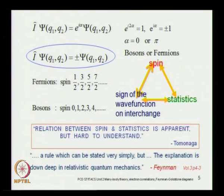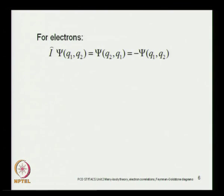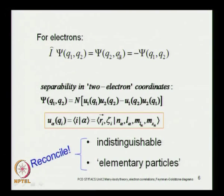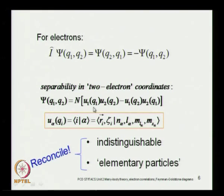Our focus in unit 2 is the discussion on how many-body correlations are to be treated. For electrons, on interchange the electron geminal — the two-electron wave function — changes sign. Consider the wave function as a function of two electrons at q₁ and q₂, separable in one-particle coordinates. The two-electron wave function is written as a product of two one-electron functions, but the product must be an anti-symmetric product, as discussed in detail in the previous course on atomic physics in the context of the Hartree-Fock.